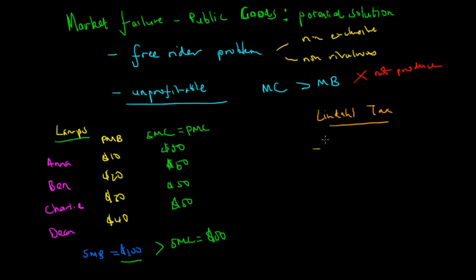So what the Lindahl tax does is that it taxes based on proportionality. By this I mean it taxes based on the proportion of social marginal benefit the private consumer gets. So as we can see, Anna derives $10 out of $100, so she derives 10% worth of pleasure. Ben derives 20%, Charlie derives 30%, and finally Dean derives 40%.